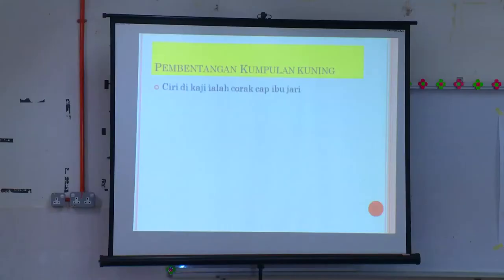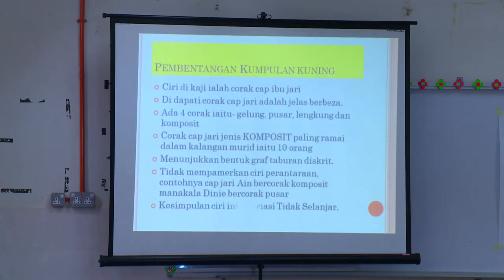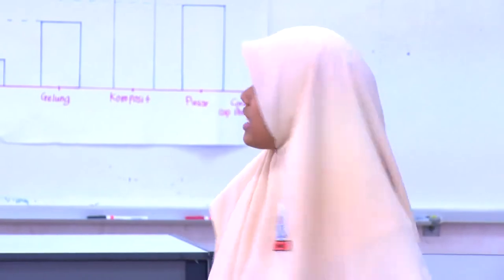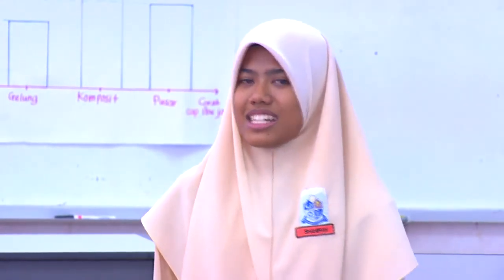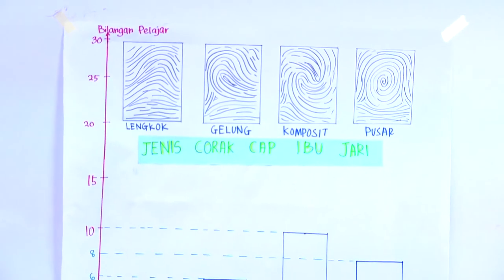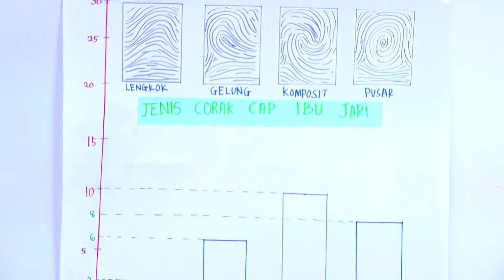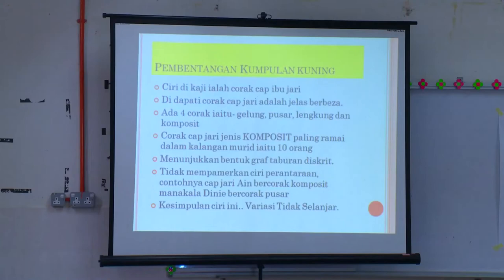Assalamualaikum warahmatullahi wabarakatuh. Saya dari Kumpulan Kuning ingin membentangkan hasil kerja kami seperti yang dipaparkan di skrin. Ciri yang kami kaji ialah corak cap ibu jari. Didapati hasil cap ibu jari adalah jelas berbeza. Terdapat empat corak cap ibu jari seperti yang anda lihat di graf, iaitu lengkung, komposit, pusar, dan gelung. Cap ibu jari komposit ialah paling ramai iaitu 10 orang.